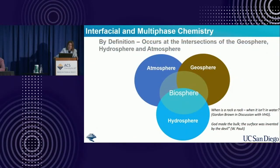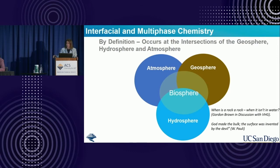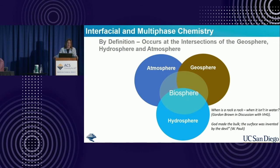So, interfacial multiphase chemistry. Taking a big picture view, by definition it occurs at the intersections of the geosphere, hydrosphere, and atmosphere—water, land, air. That's where the whole idea of these two phases affecting all these spheres comes from. You have the biosphere on top of all of them, and at the interface between these is where all the exciting chemistry is going on. Barbara told us about surface chemistry and the importance of surface chemistry, and here we have that example.